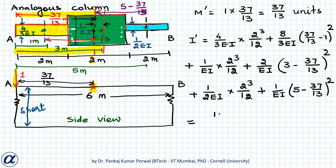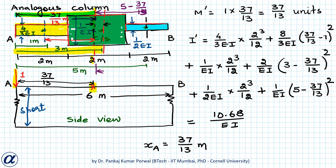Simplifying all these terms gives I' equals 10.68/EI. Next, XA is the distance of edge A from the centroidal axis, and XB is the distance of edge B. XB equals 6 − 37/13, which equals 41/13 meters.